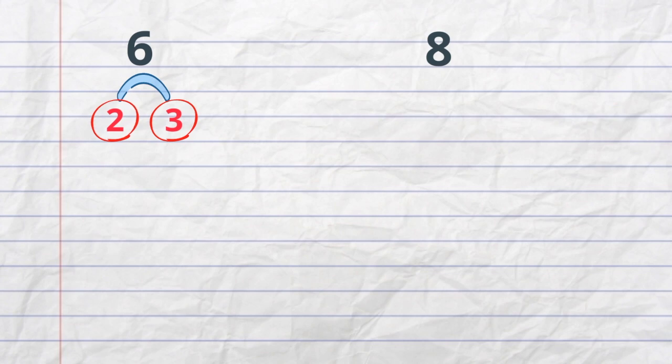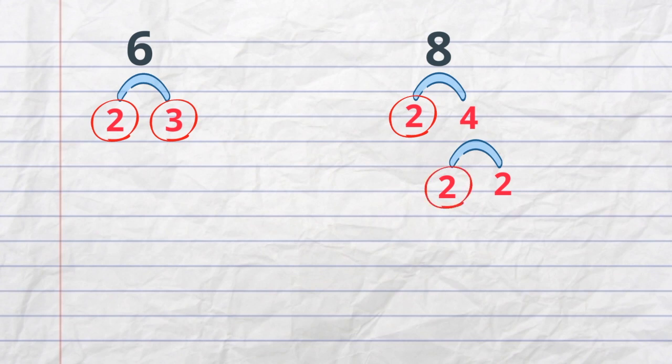For 8, I will begin with 2 times 4. I will circle the 2 because it is prime. And then I will multiply 2 times 2, and I will circle both of the 2's because they are prime. So now we have all the prime numbers.